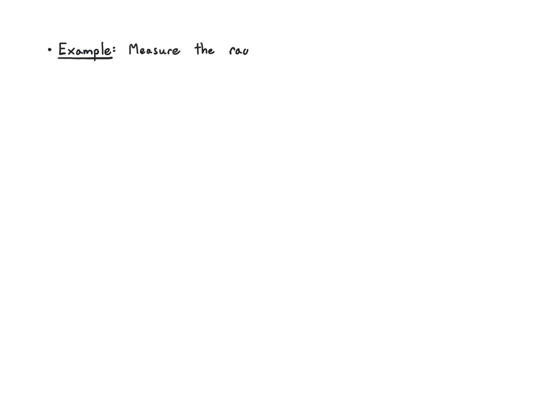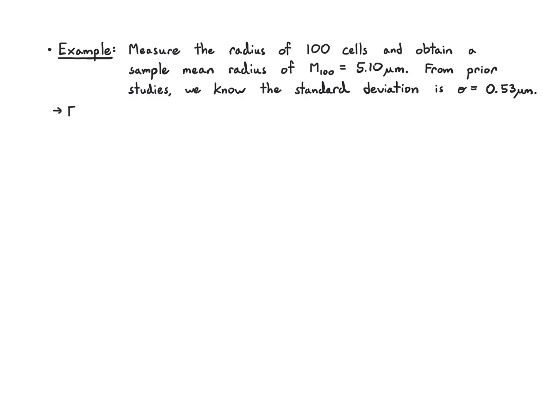What we've done is measured the radius of 100 cells, and from those measurements we calculated a sample mean radius of M100 which is 5.1 microns. From prior studies, we also believe that the standard deviation in this calculation should be 0.53 microns.